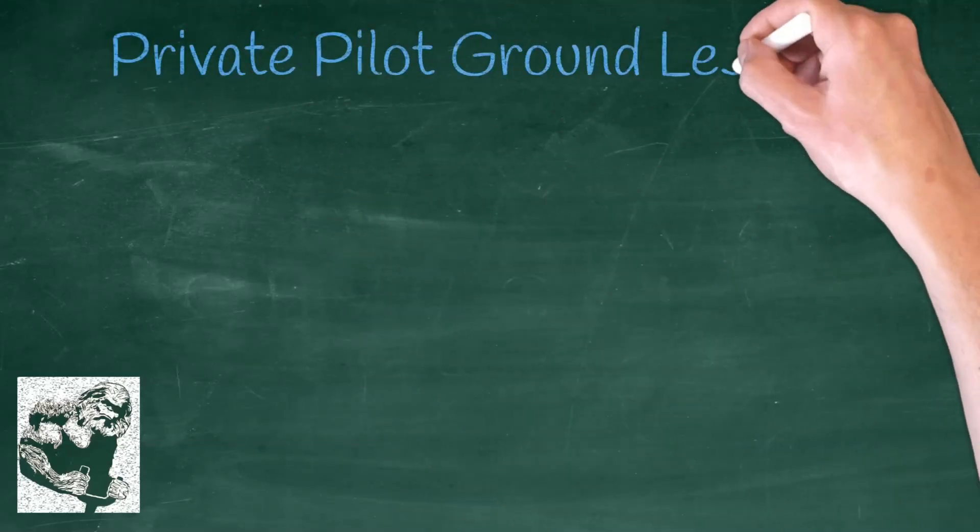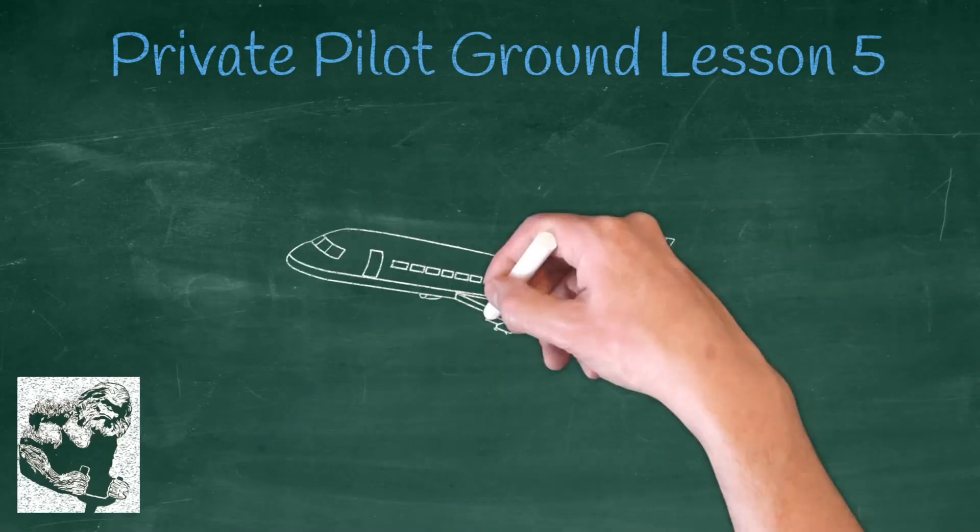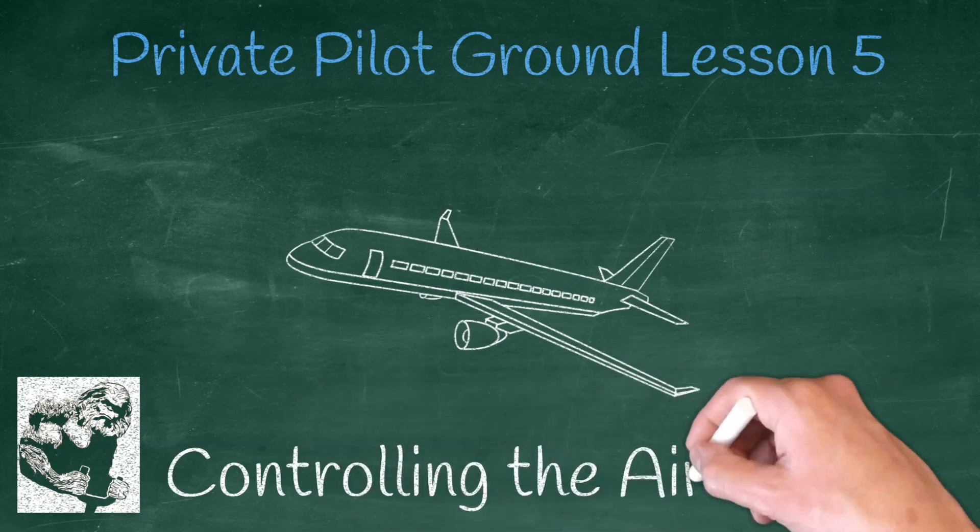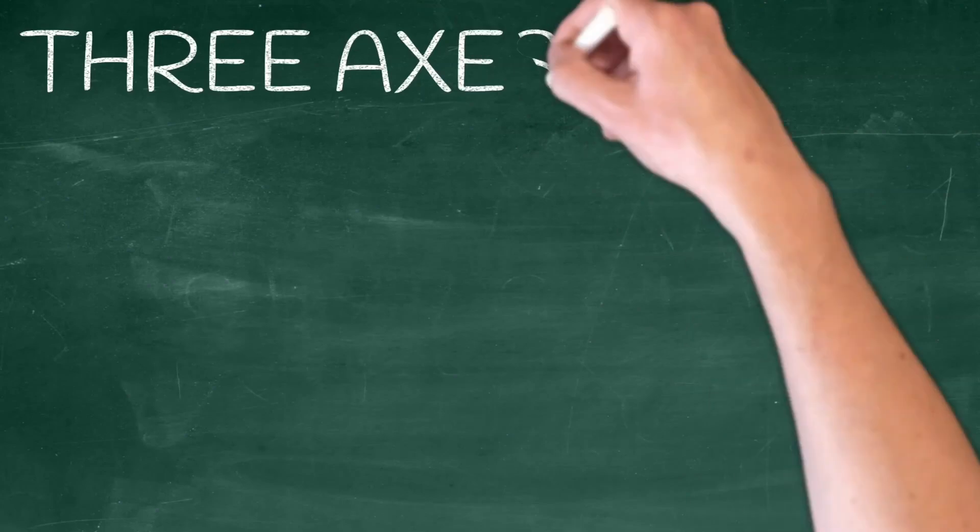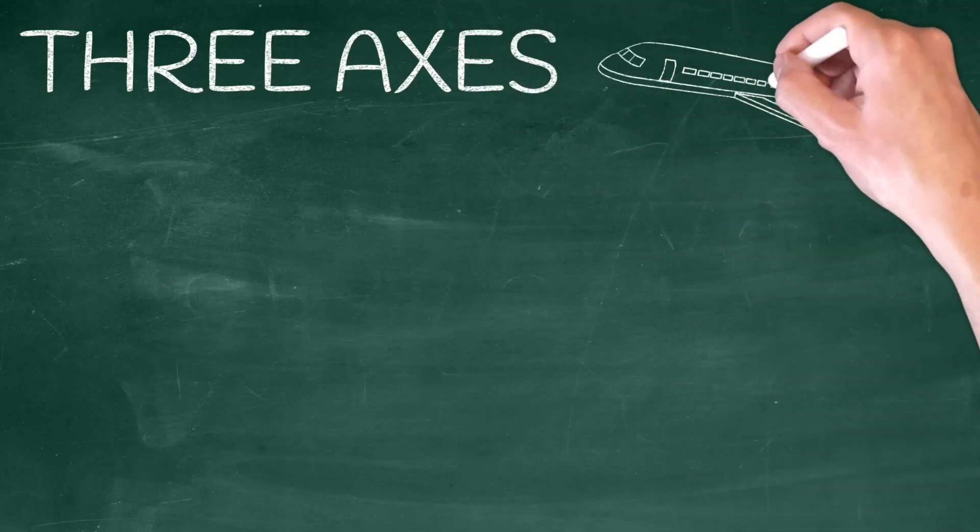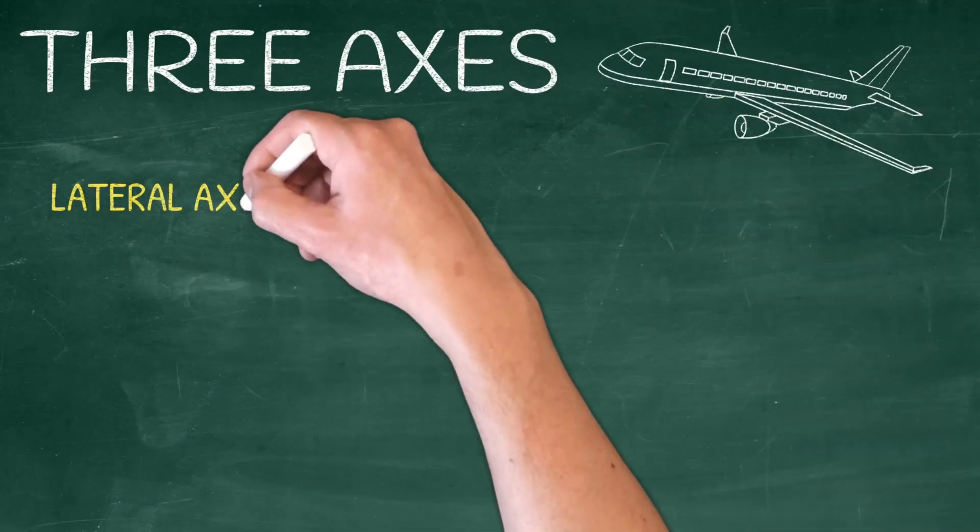Welcome to the free pilot training channel. Today on the private pilot ground lesson five we're going to be talking about controlling the airplane. An airplane is able to move into three dimensions by rotating around its center of gravity on three axes.